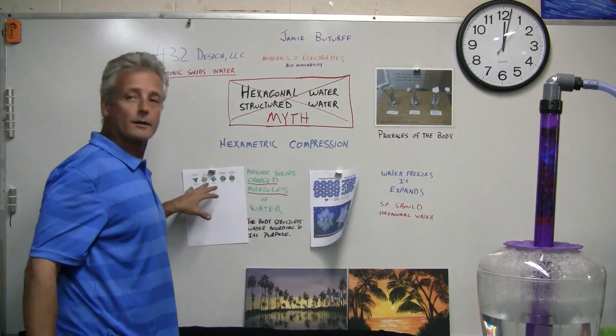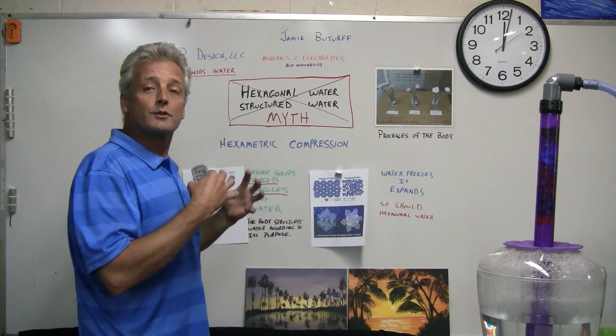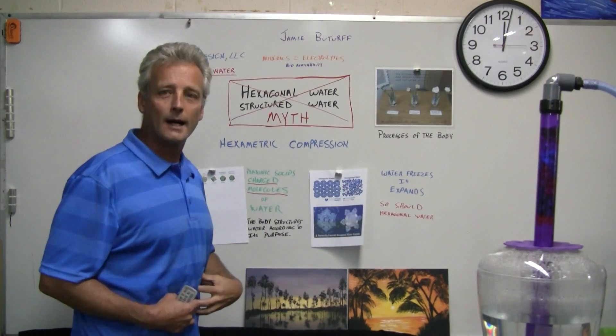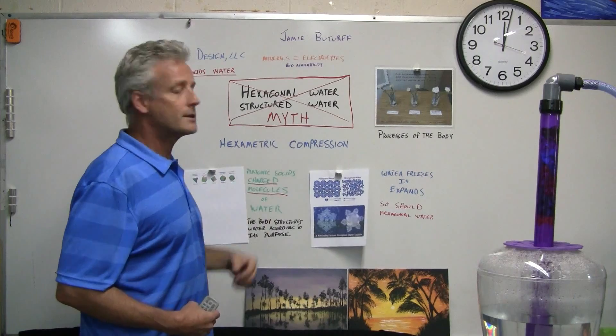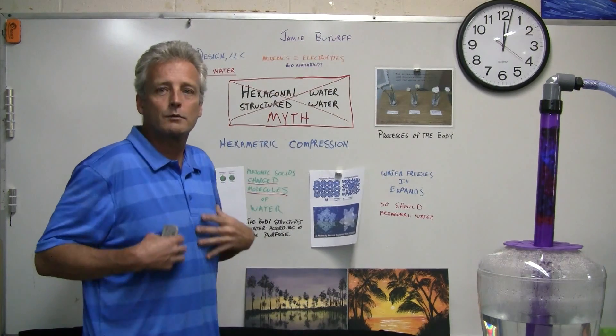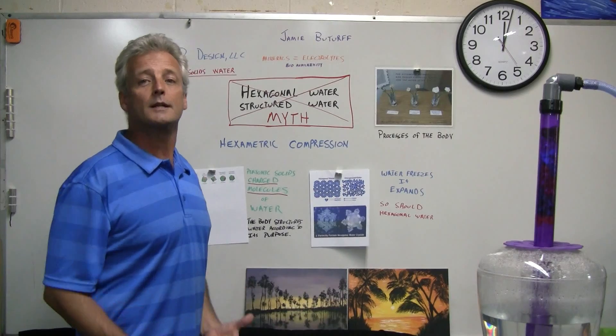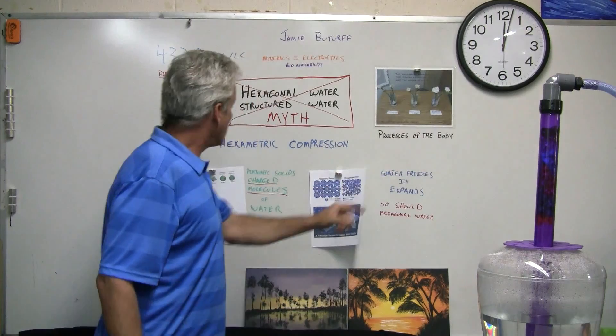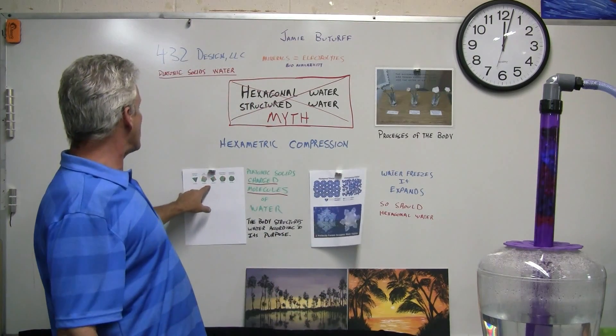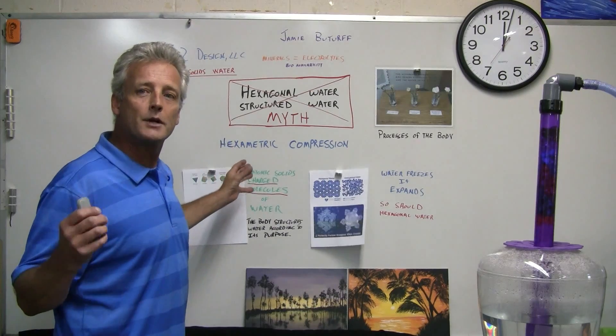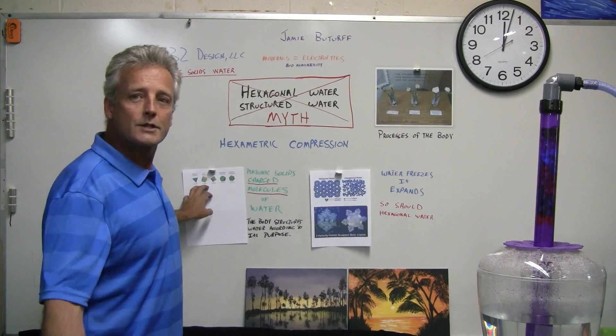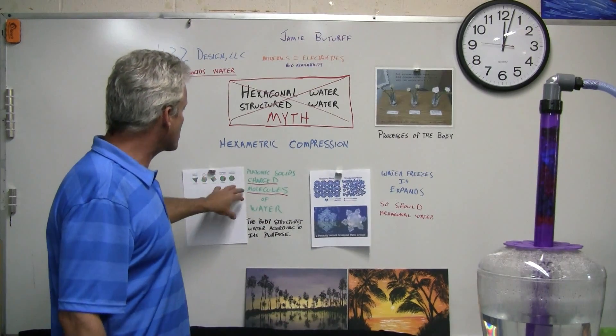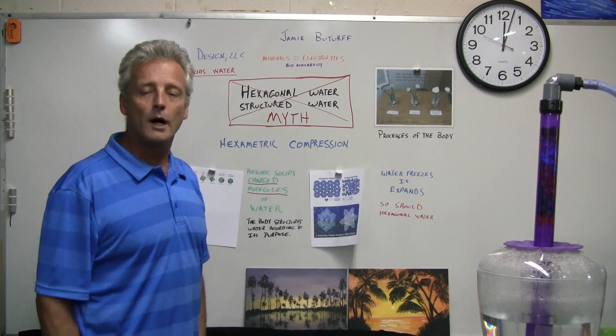The body needs these electrolytes to create these charged particles that allow - because each one of these particles of water requires a different charge to form it. Your body does that. Your body creates the pH in your blood, the water that you drink does not. It all depends on the electrolytes and the body charge. If you don't have electrolytes, you don't have electricity going on. You need electricity in the body to do all these different things. The processes of the body create hexametric compression, moves the molecules depending on their purpose. That's how the body delivers oxygen, removes waste - the body does all these different processes through charged platonic solid molecules of water.